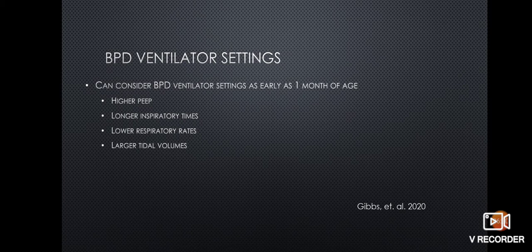Some patients may go on BPD ventilator settings as early as one month of age. These settings include a higher PEEP — you may see PEEPs in the teens and up to a PEEP of 20 — along with longer inspiratory times, lower respiratory rates, and larger tidal volumes.